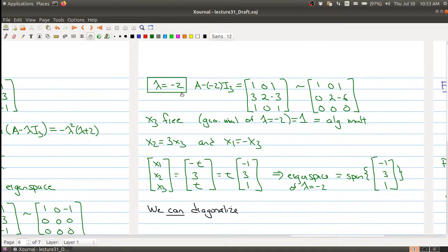And then the same thing for the other eigenvalue, for negative 2, the geometric multiplicity is equal to the algebraic multiplicity. We can diagonalize.